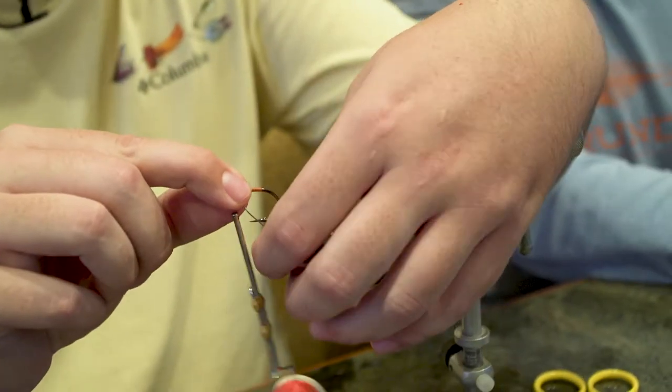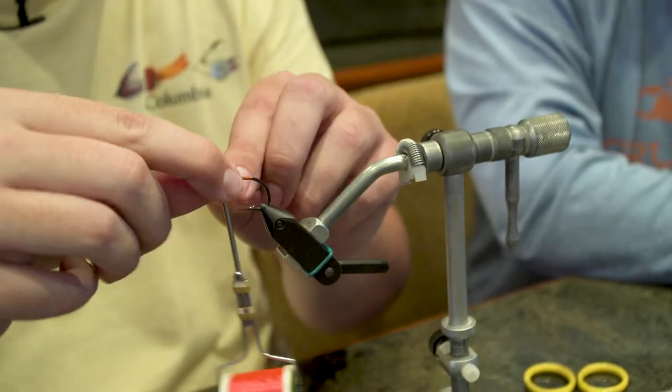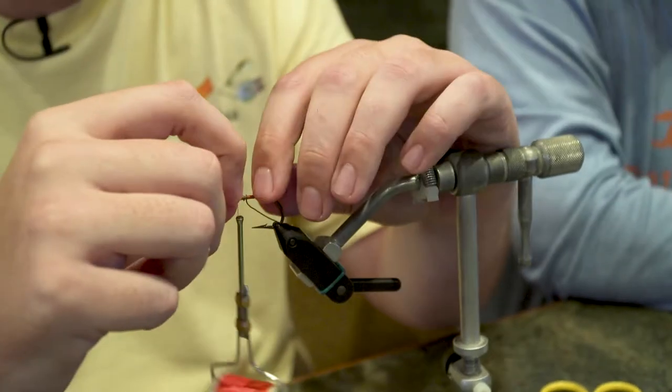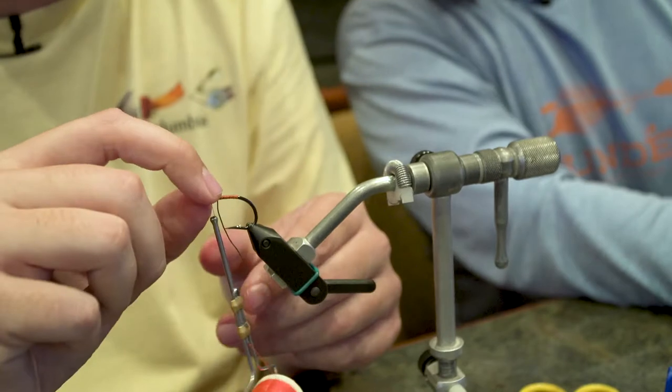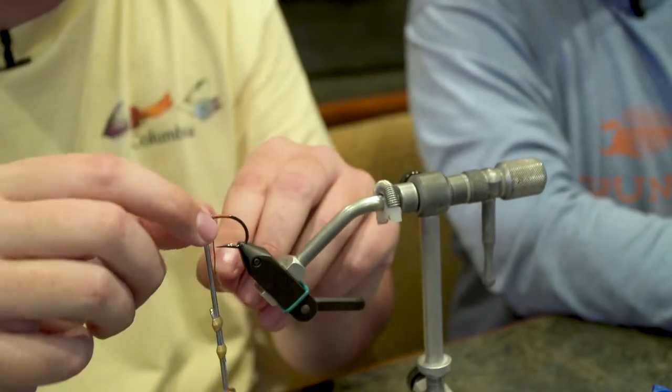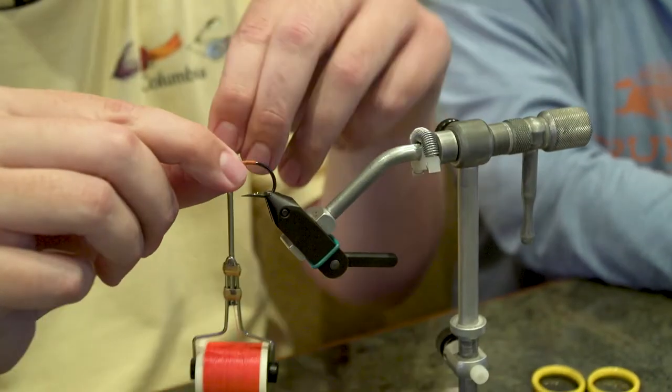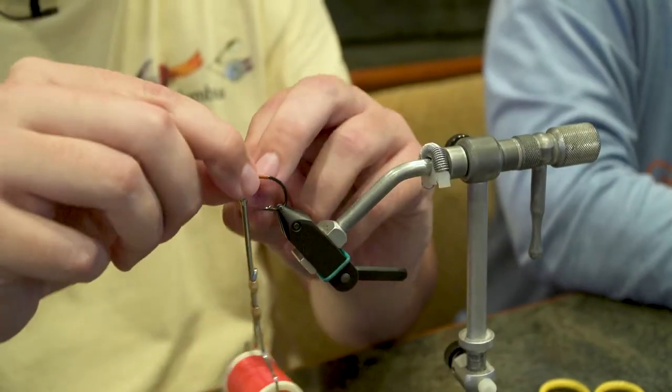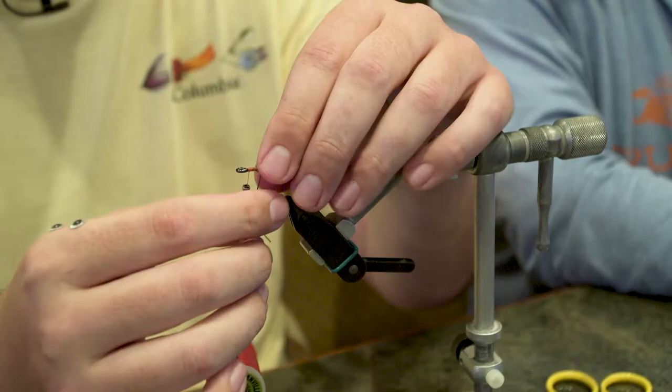But you can actually also pinch that off with your fingernail. So if you'll excuse me obscuring the camera, you just get a good wrap on there, kind of push it together. And what this lead will do will help get this fly deep in the water column.